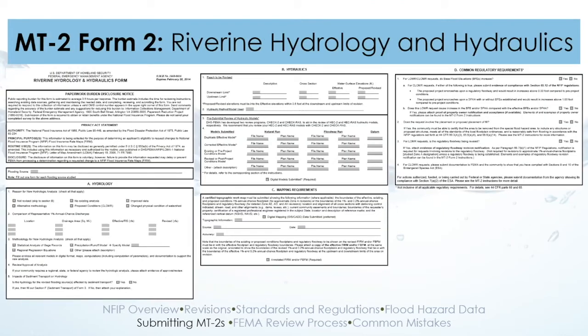Form 2 covers river hydrology and hydraulics — where you detail exactly what you're changing, what your flooding source is, whether you're changing the hydrology and why, what methods you're using, where your hydraulic tie-ins are, what your limits of revision are, your modeling naming convention and datum. It goes all the way down to mapping requirements — what type of survey information are you using as the basis. Your revision must be based on data that is as good or better than the effective analysis. You will also mark yes or no to major requirements and standards.